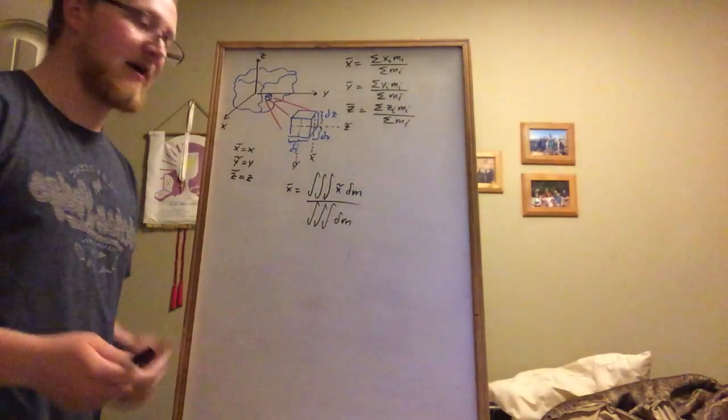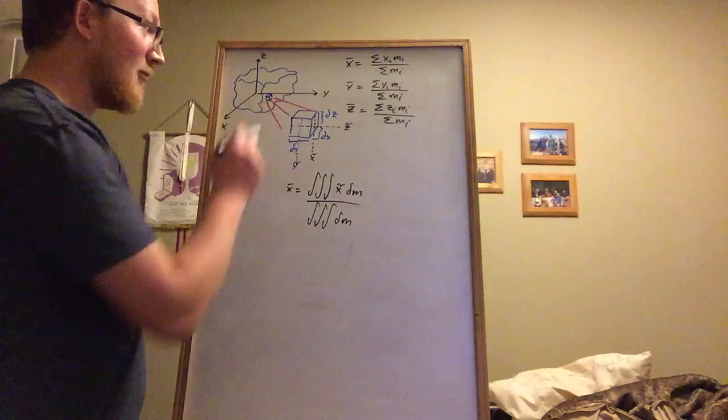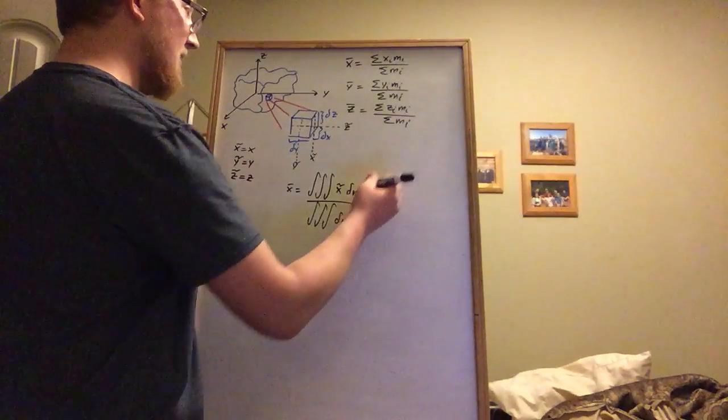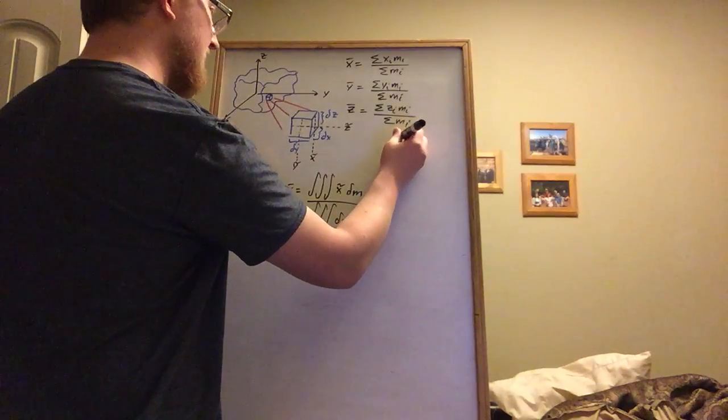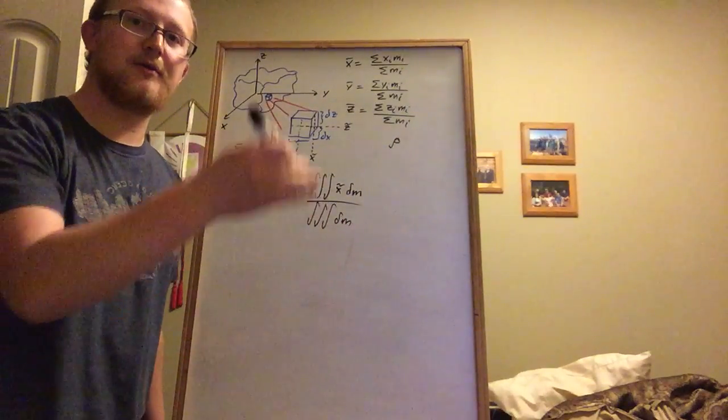So this is kind of our framework. We do need to figure out what dm is, and for that we'll go to our shape. Now dm is going to equal density times the volume, right? Density times volume gives us mass.